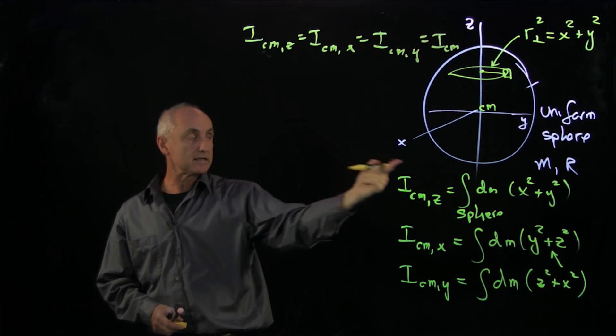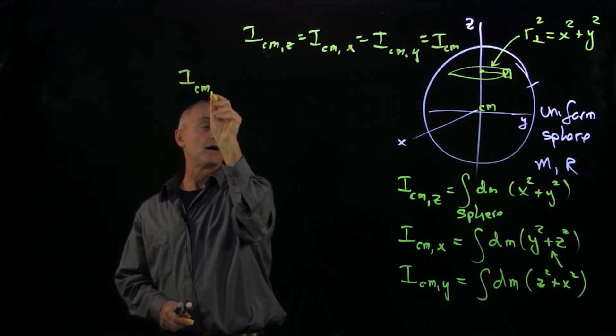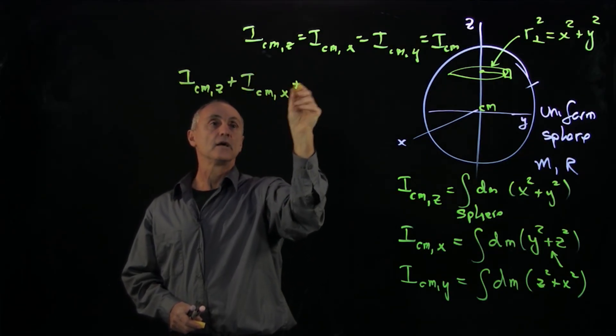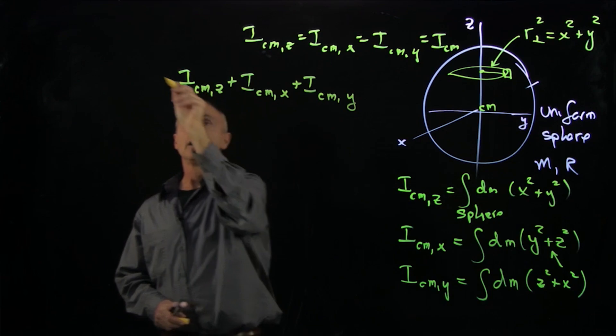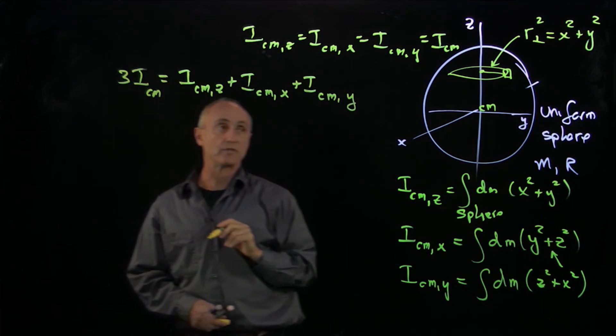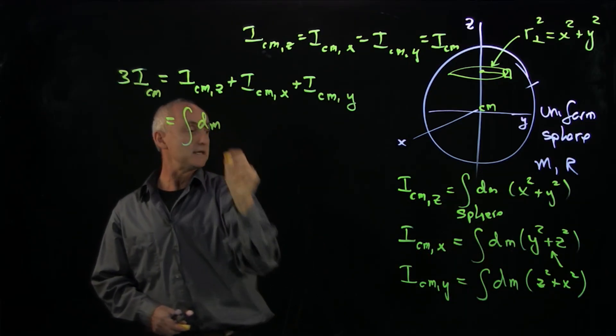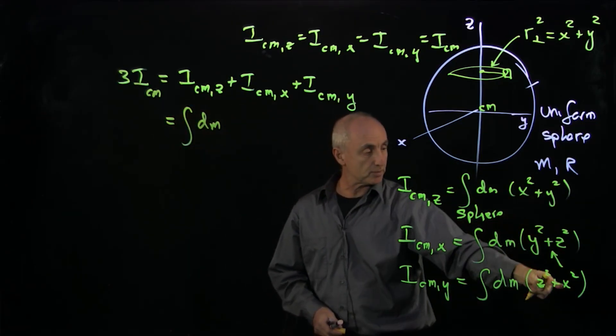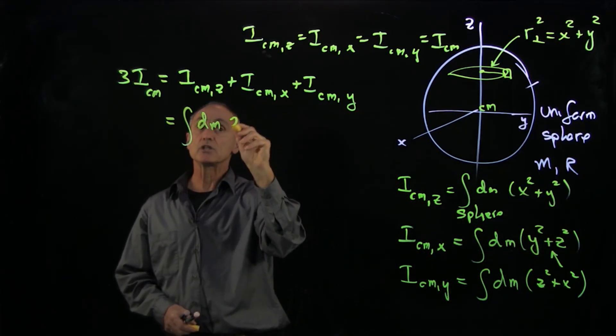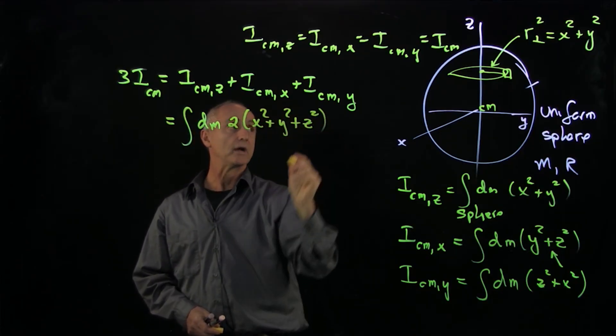Now, if I add these three pieces together, what do I get? So if I add I_cmz plus I_cmx plus I_cmy, I get three times the moment about the center of the axis. Now, what happens when I add these three integrals? I get dm. If you'll notice, x squared appears twice, y squared appears twice, and z squared appears twice. So I get 2 times x squared plus y squared plus z squared.